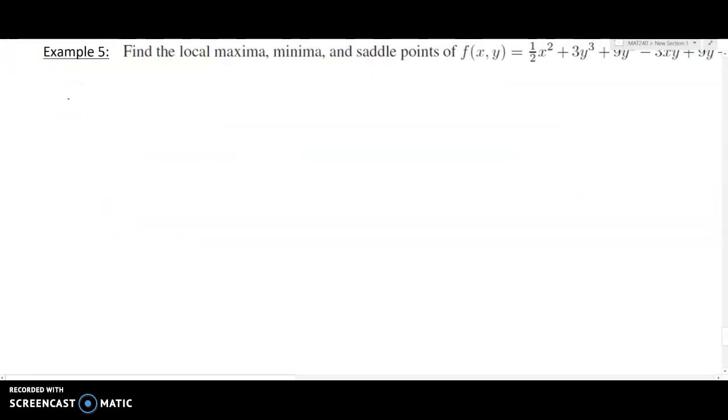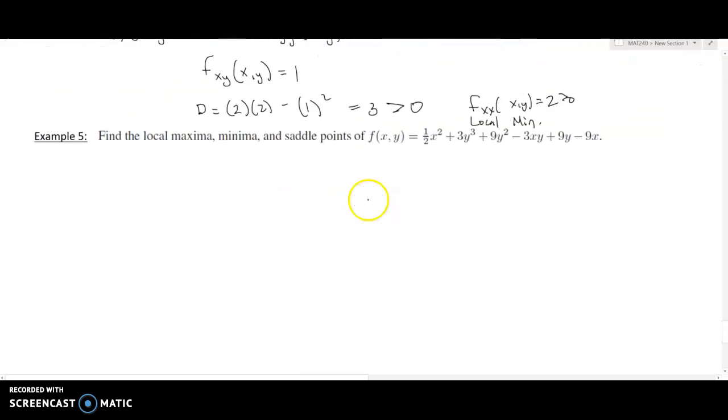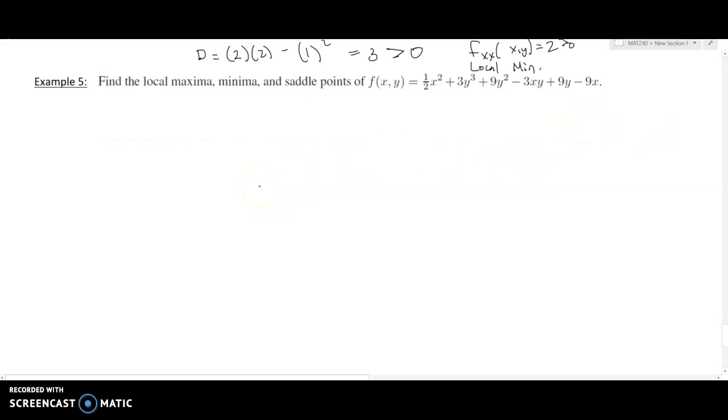For this example, we can find our partial derivatives. Our function is this guy here, and so we'll find our partials with respect to x and with respect to y to find our critical points. The derivative of this guy with respect to x is going to be 1x plus 0 plus 0 minus 3y plus 0 minus 9. And there's our partial with respect to x.